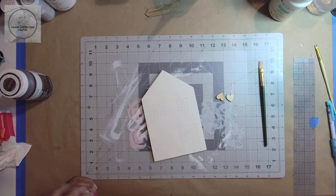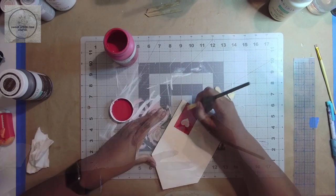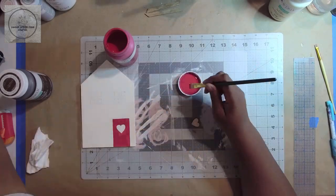I used Waverly chalk paint in crimson to paint the door and the two hearts. I did two coats on each, drying between coats.